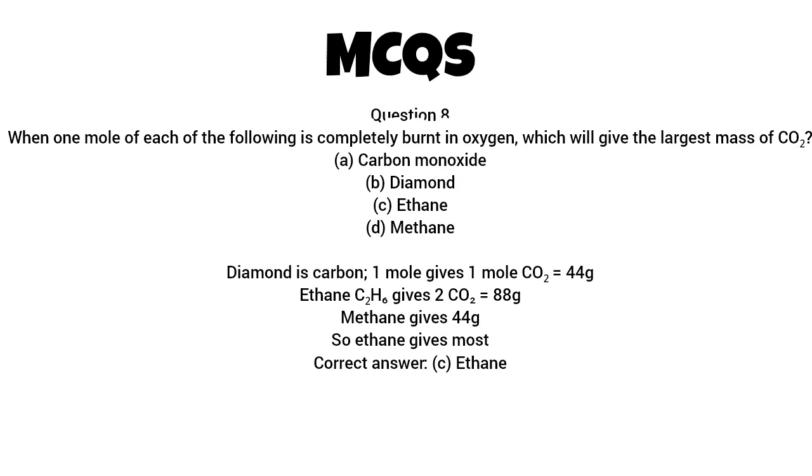Question 8. When one mole of each of the following is completely burned in oxygen, which will give the largest mass of CO2? Options: A. Carbon monoxide. B. Diamond. C. Ethane. D. Methane. Diamond is carbon. One mole gives one mole CO2 equals 44G. Ethane C2H6 gives 2CO2 equals 88G. Methane gives 44G. So, ethane gives most. Correct answer C. Ethane.